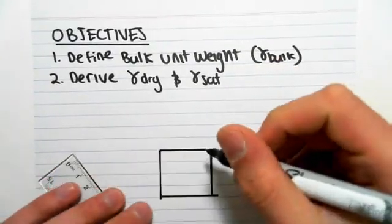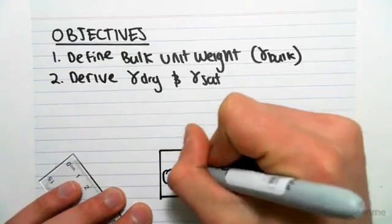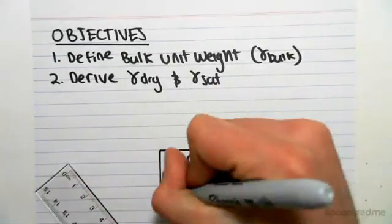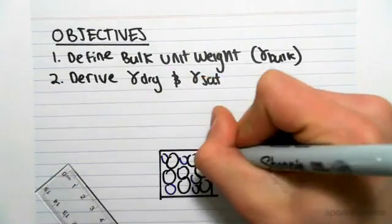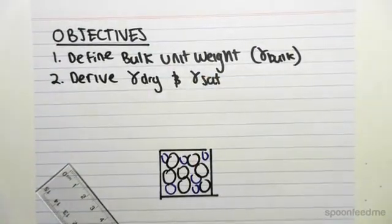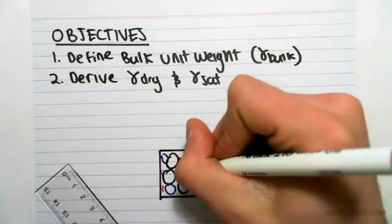So our sample of soil, as we know, has solid particles. It's going to have water, which is given by blue, and it's also going to have pockets of air in red.